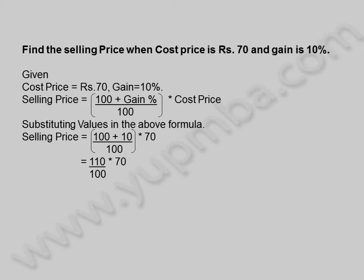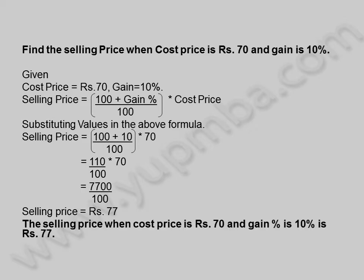That is equal to 110 by 100 into 70, which equals 7700 by 100. Selling price is equal to 77 rupees. The selling price when cost price is 70 rupees and gain percentage is 10 percentage is 77 rupees.